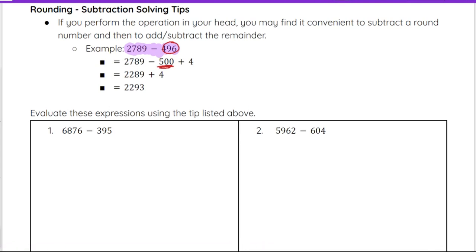Again, I can subtract 500 and then add those extra 4 in to compensate. When I do that, remember if I'm looking at this and doing 2789 minus 500, it's really the 500 and 789 that we're looking at — those portions.